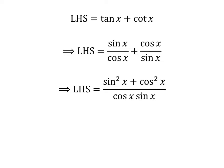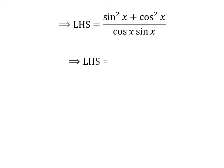Addition of fractions gives us left hand side equal to sin²x plus cos²x over cos x times sin x. We know sin²x plus cos²x is equal to 1. So left hand side equals 1 over cos x times sin x.